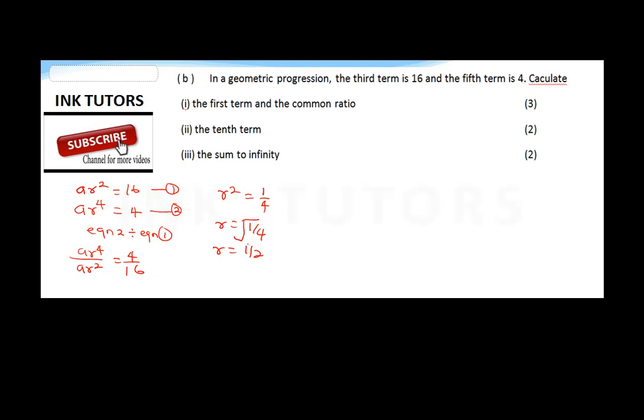So we should find the first term and the common ratio. To find our A, we'll put r in equation 1. So to get our A, we're going to have A times (1/2)² equals 16. That means A times 1/4 equals 16.